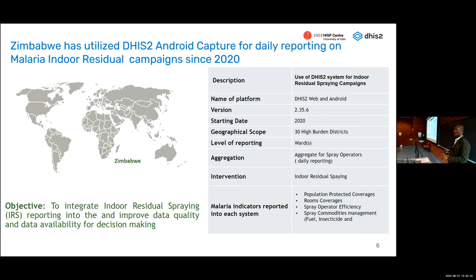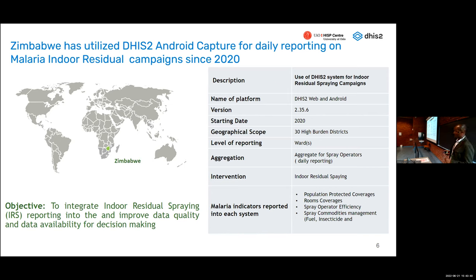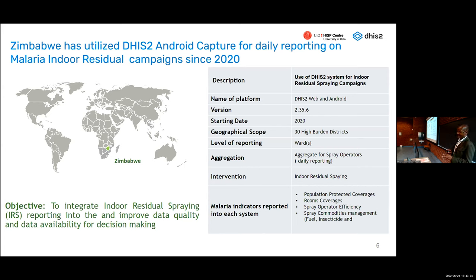We started this in 2020 as a pilot in one of our provinces, which had about nine districts. Those nine districts started reporting using DHIS2. We then scaled it up in 2021 to 30 more districts — these are high-burden districts with an incidence rate of five and above per thousand population.